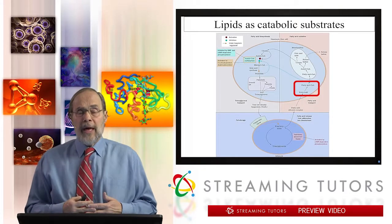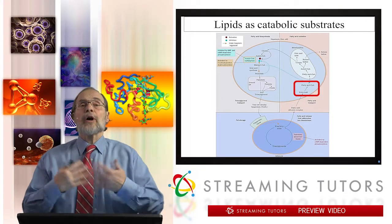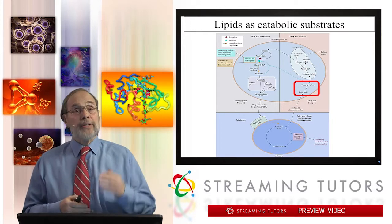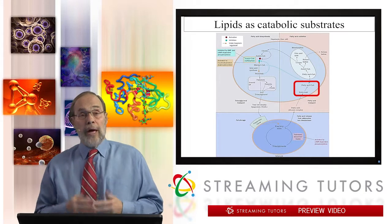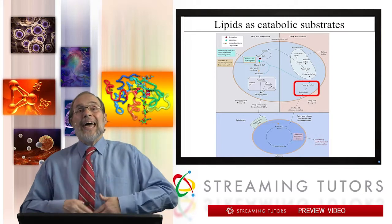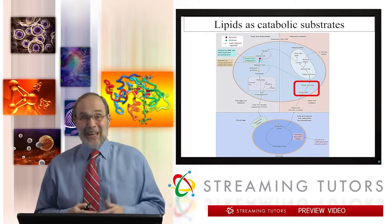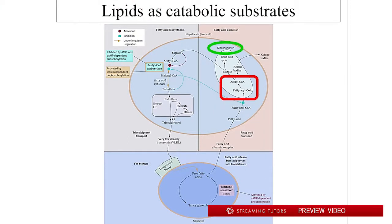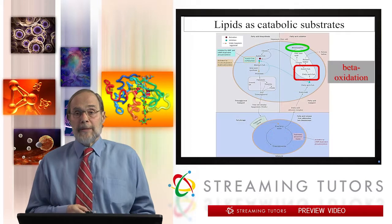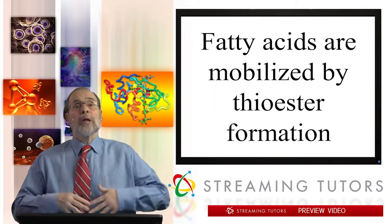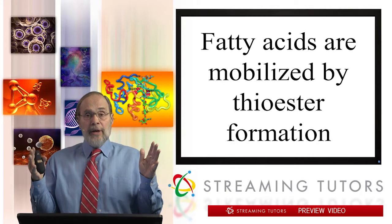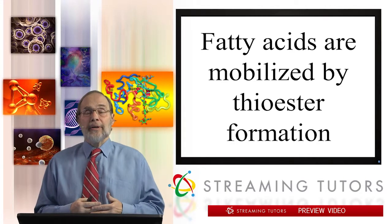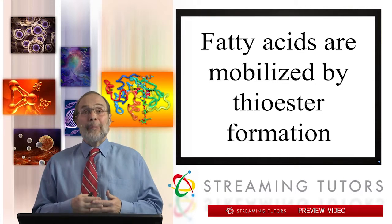The fatty acid is taken up and converted into an acyl-CoA — that is, the fatty acid is connected to CoA in the same way that acetate is connected to CoA in acetyl-CoA, but it's a much longer fatty acid rather than just acetate. That acyl-CoA is then transported in a rather convoluted way into the mitochondrion and subjected to beta-oxidation inside the mitochondrion. Let's look at how fatty acids are mobilized from the free fatty acid state to the acyl-CoA state, prepared for beta-oxidation.